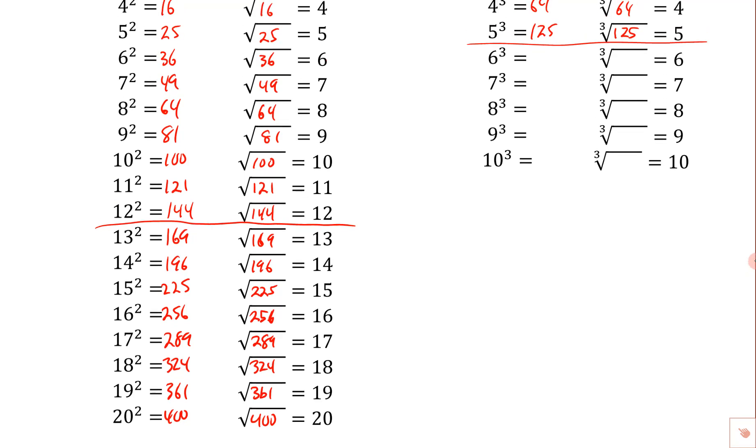And then again, this list right here of the perfect cubes. Let's see, 6 cubed is 216, so the cube root of 216 would be 6. 7 cubed is 343, so the cube root of 343 would be 7. 8 cubed is 512, so the cube root of 512 would be 8.